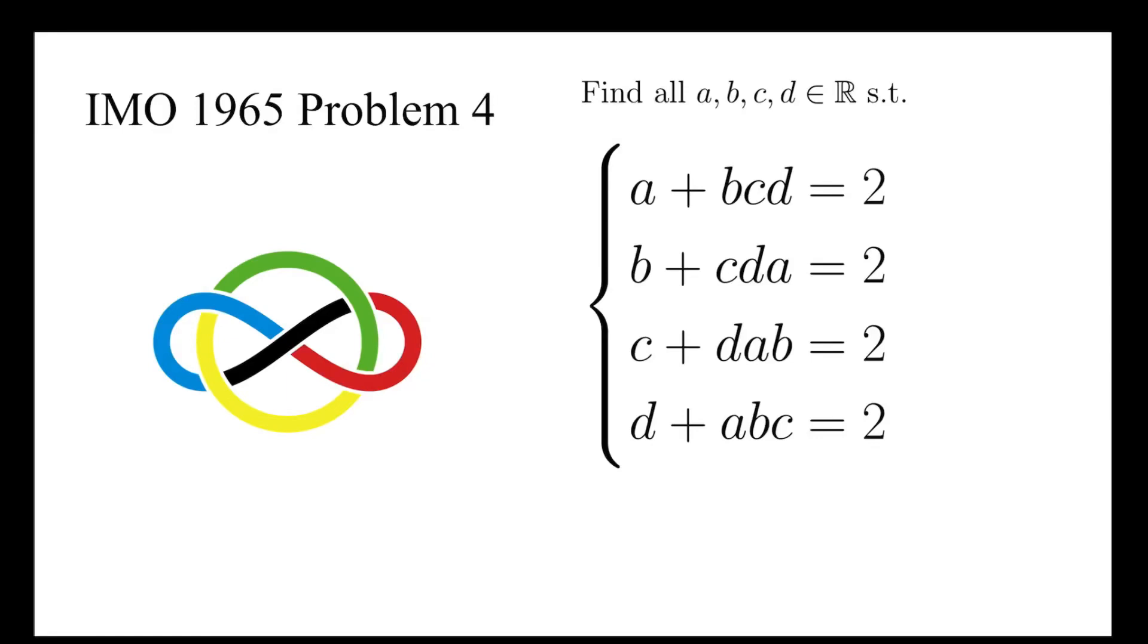In this video, we're going to find all real numbers a, b, c, and d such that a plus bcd, b plus cda, c plus dab, and d plus abc are all equal to 2. Before we move on, don't forget to give a like, subscribe to my channel, and turn on post notifications.